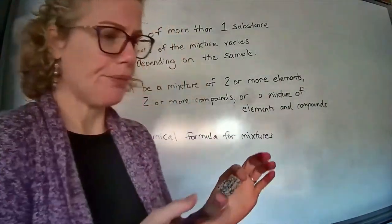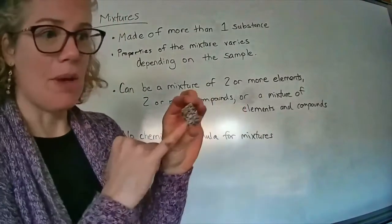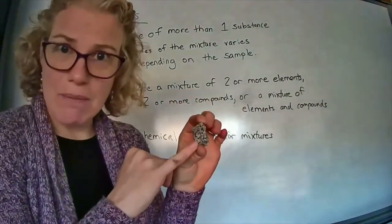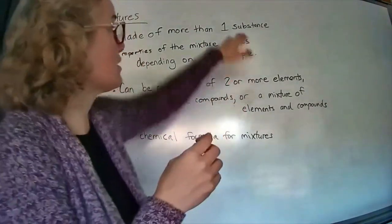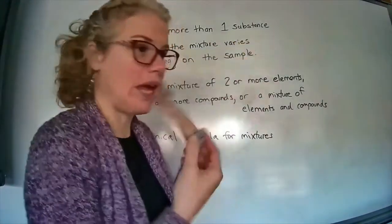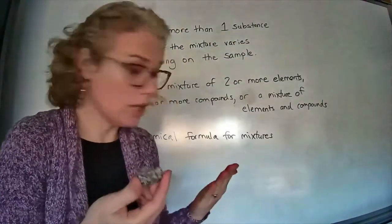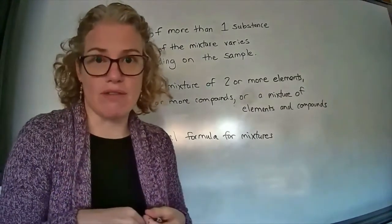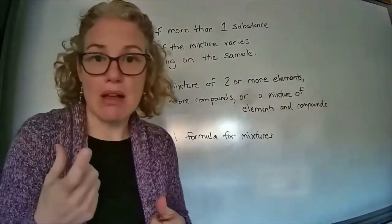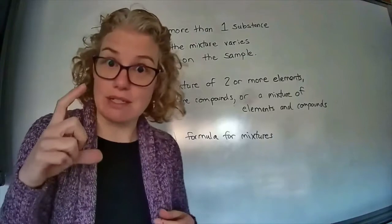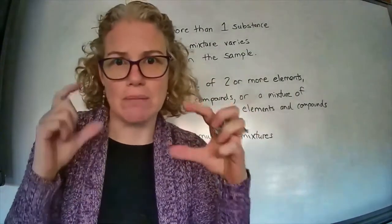Here's a rock. A rock is gonna be a mixture of various substances, and we can't write a chemical formula for a rock. You can also have a mixture of liquids. I could take rubbing alcohol, which has a chemical formula because it's a compound, and I could mix that rubbing alcohol with hydrogen peroxide, which is also a compound.